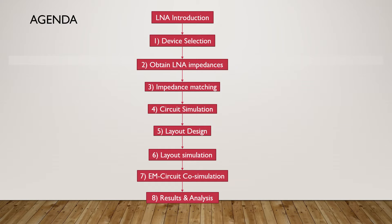Firstly, a device will be selected. Secondly, the LNA impedances need to be obtained. Thirdly, the impedance matching for the LNA should be done. The fourth step is the circuit design and simulation. As a fifth step, layout design should be done. Then layout simulation should be conducted, followed by EM circuit co-simulation. Finally, the simulation results will be analyzed.